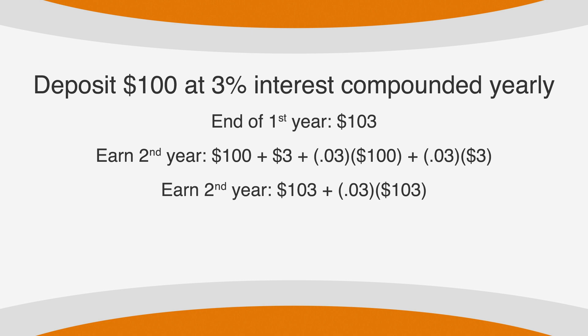So we would have $100 plus $3 plus 3% of $100 plus 3% of $3. So at the end of the second year, you would have $103 plus an additional $3.09 earned in interest, which means you would now have $106.09 in the bank. If you left your money in the bank, you would start earning more and more money off the interest.